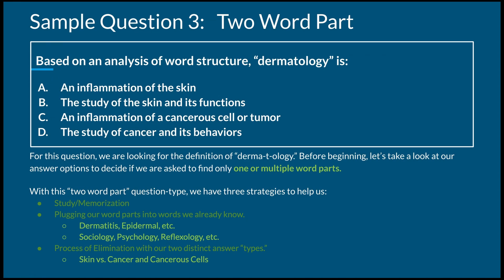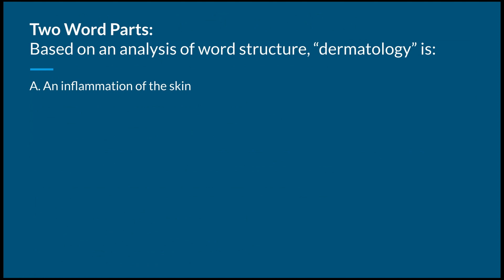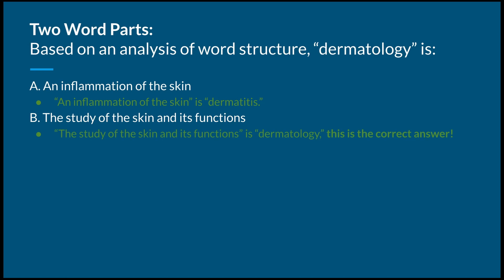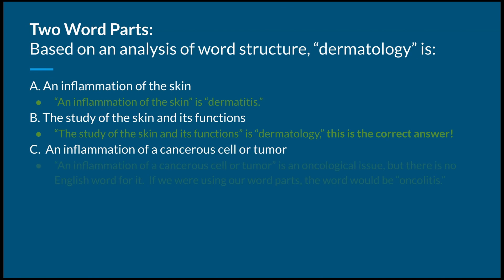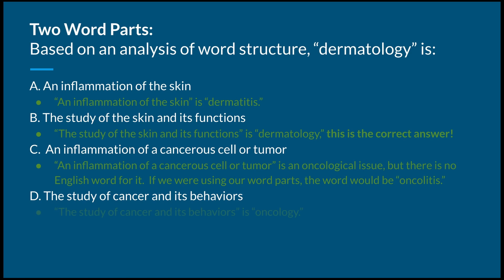With all strategies in mind, let's take a look at our answers. Option A — an inflammation of the skin — is dermatitis; -itis means inflammation of. Option B — the study of the skin and its functions — is dermatology. That is our correct answer. Option C — an inflammation of a cancerous cell or tumor — would be oncolitis using word parts, but that's not a correct medical term. Option D — the study of cancer and its behaviors — is oncology. The word parts -ology and -itis combine with root words derma and onco to form these terms.